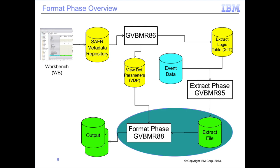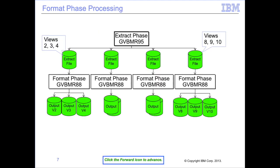In this module, we'll focus on these format phase logic table functions and introduce the extract file format. The extract engine GBB MR95 is a parallel processing engine, yet the format phase GBB MR88 is not. It processes only one extract work file, yet the extract file can contain the extracted records for multiple views. Each GBB MR88 execution can produce multiple extracted files. The final output for each view is produced by only one format engine execution. In this example, the extract file on the left has the extracted records for views 2, 3, and 4, while the one on the right has the records for views 8, 9, and 10. The GBB MR88 execution on the left produces the outputs for views 2, 3, and 4, while the one on the right produces the outputs for 8, 9, and 10.